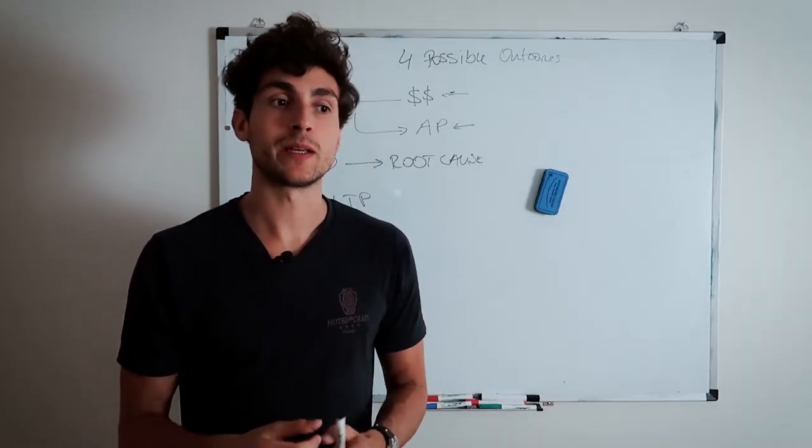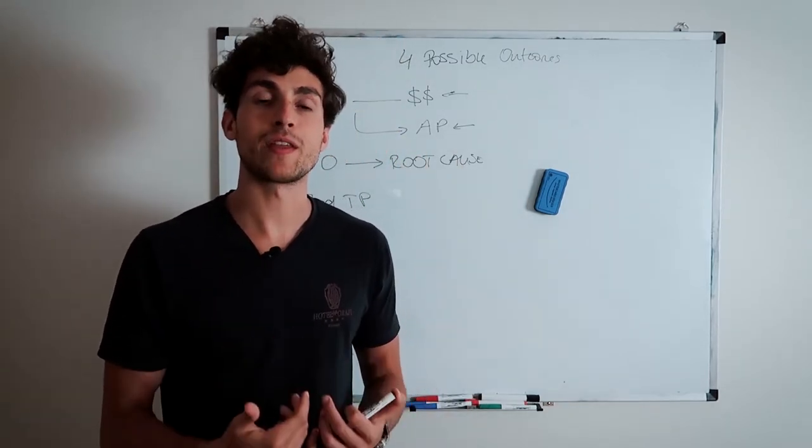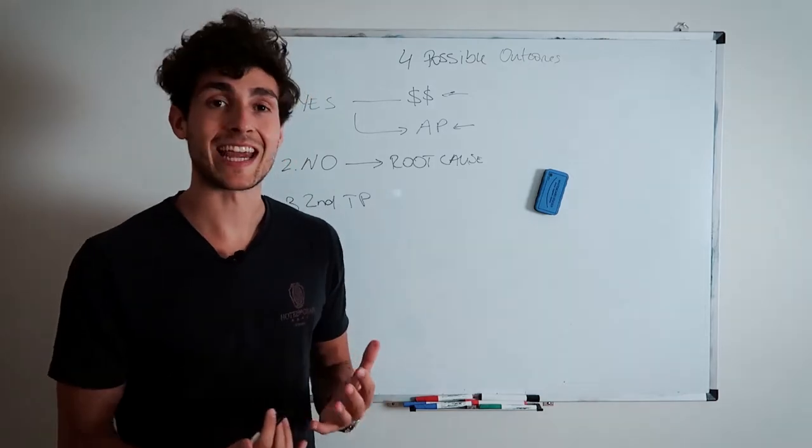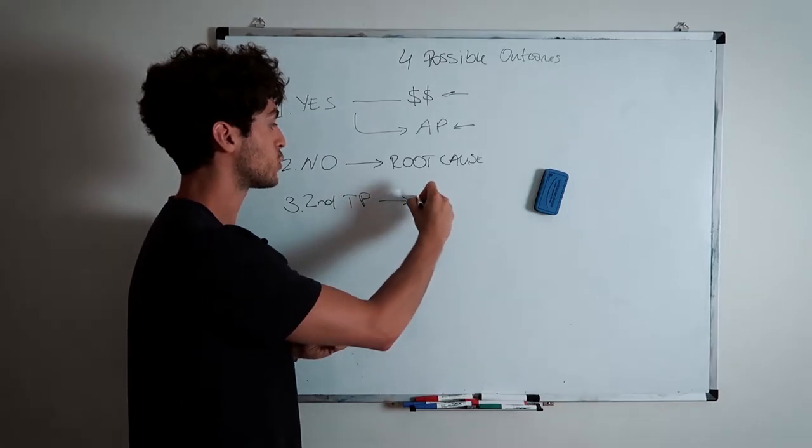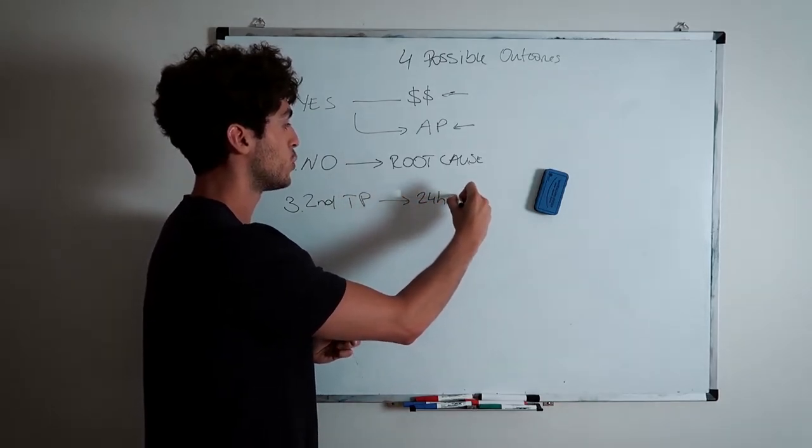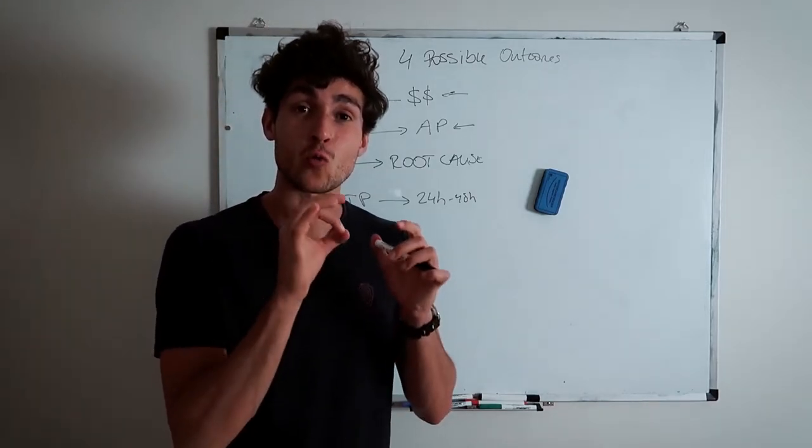Now, if they generally, generally need to speak to their business partner, a husband, wife, whatever it is, right? Whoever they actually need to speak to. If that's the case, then you want to go ahead and go ahead and schedule an appointment 24 hours to 48 hours later. Okay? So you want to go ahead and pencil it down right there and then.